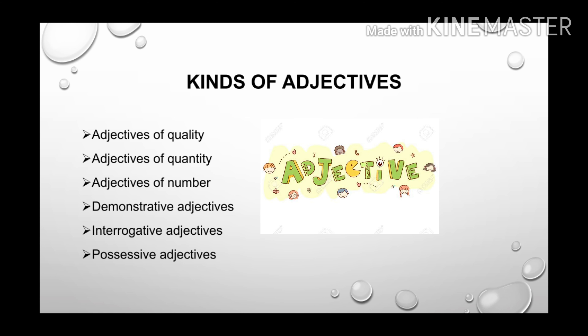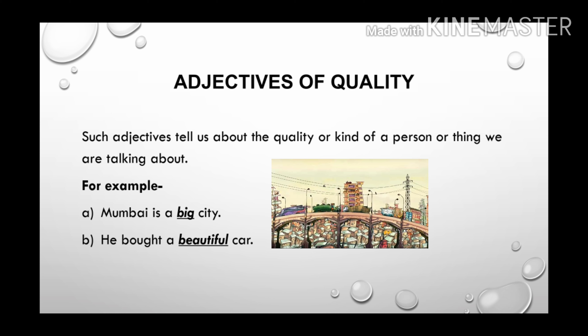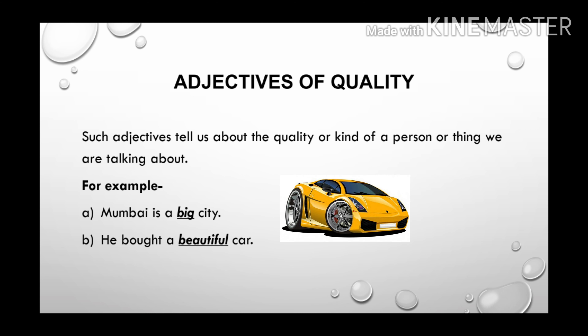Now let's understand kinds of adjectives. There are six kinds of adjectives: adjectives of quality, adjectives of quantity, adjectives of number, demonstrative adjectives, and possessive adjectives. Let's start with adjectives of quality. Such adjectives tell us about the quality or kind of a person or thing we are talking about. For example, Mumbai is a big city. Here, adjective big is telling us the quality of the city. In another example, he bought a beautiful car — beautiful is the adjective telling the quality of the car.